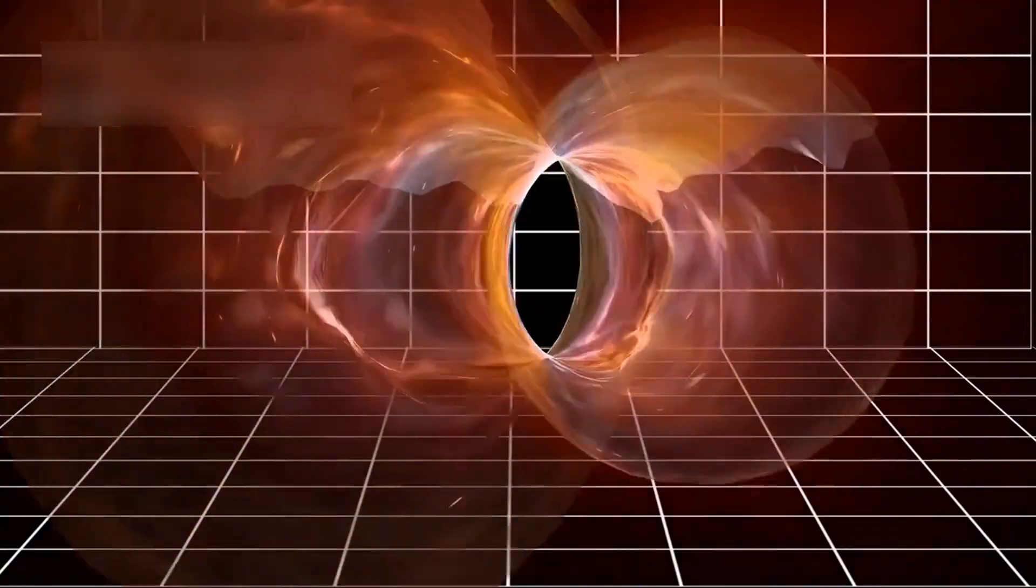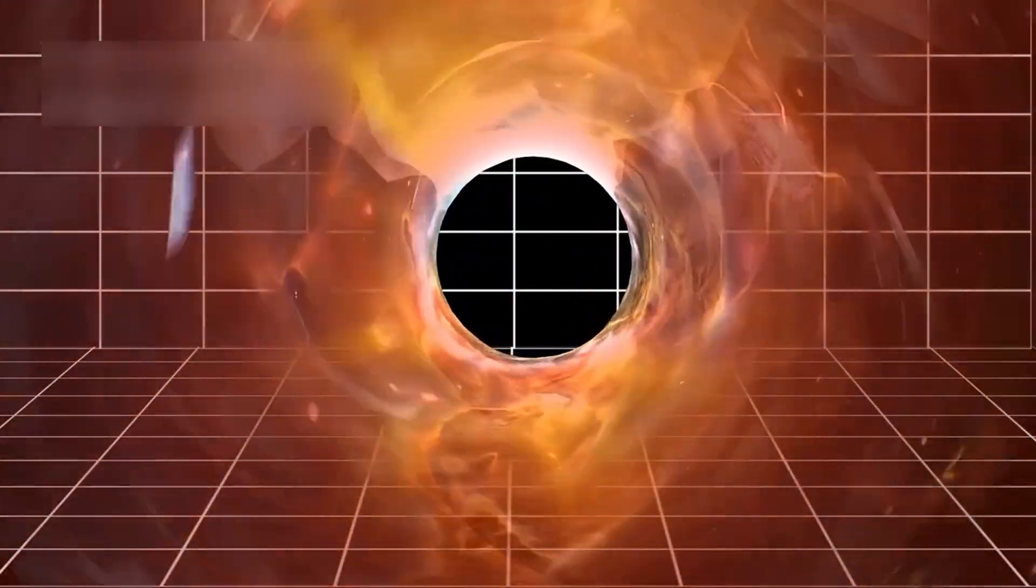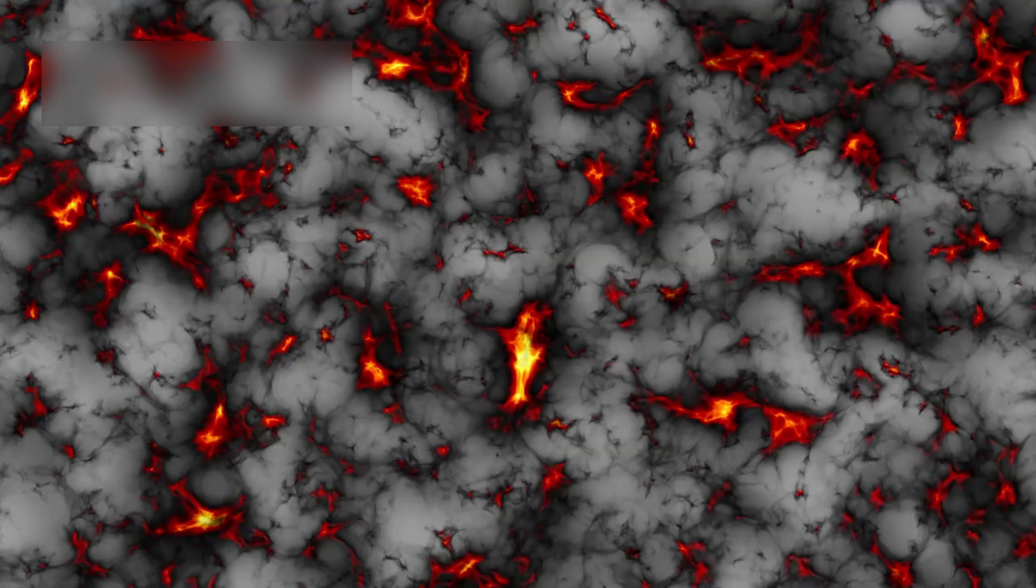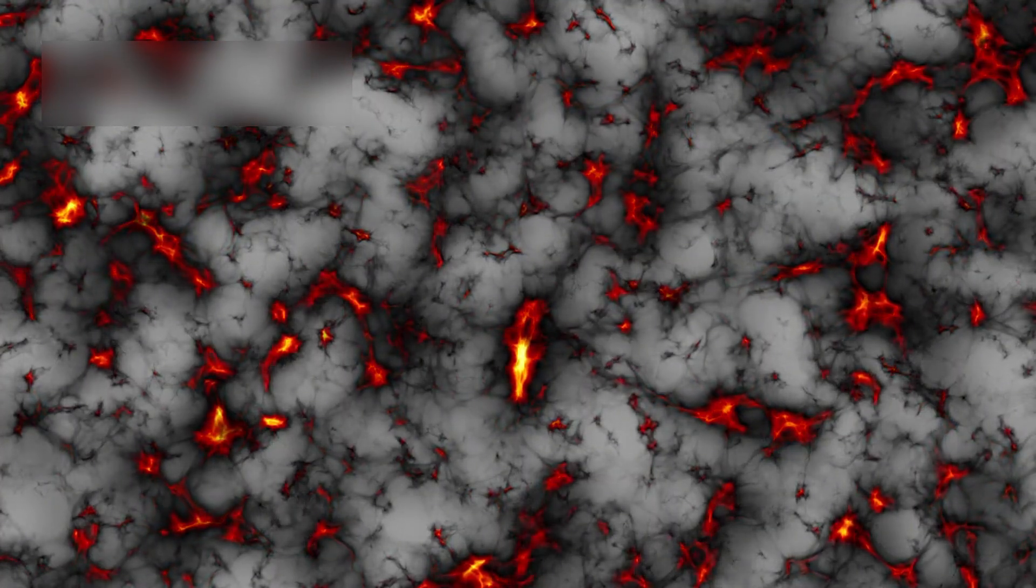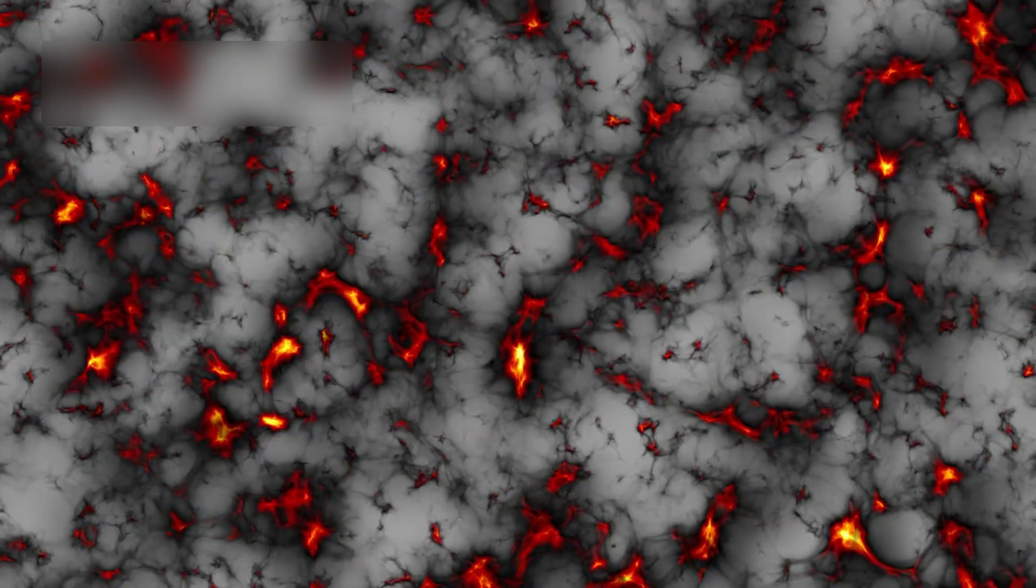Yet all visible matter makes up less than 5% of the total universe. Dark matter is 27%, and dark energy makes up a huge 68% of everything out there. Dark matter's gravity binds galaxies, while dark energy causes expansion. Together, they guide the future of the universe, though both remain mysterious.